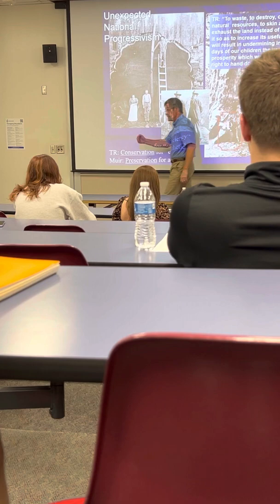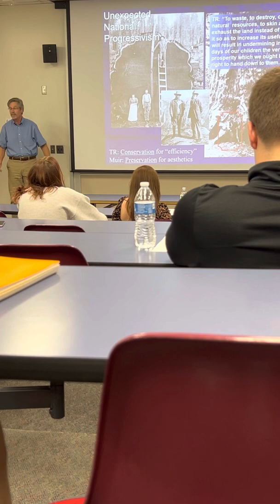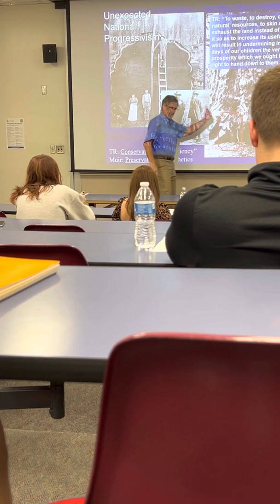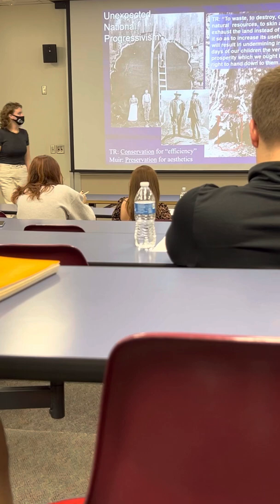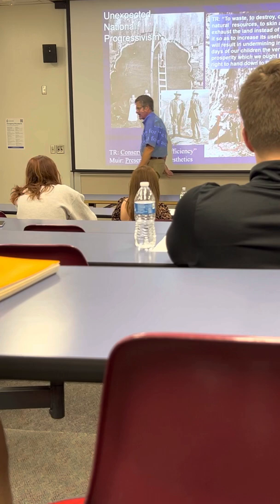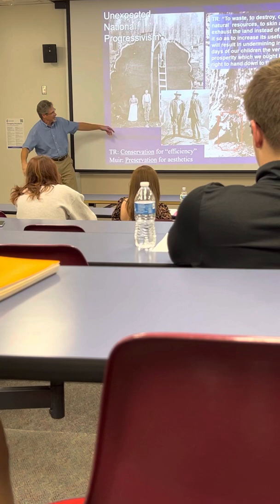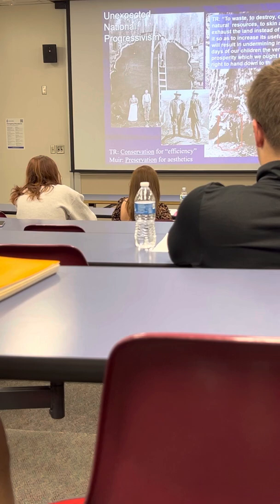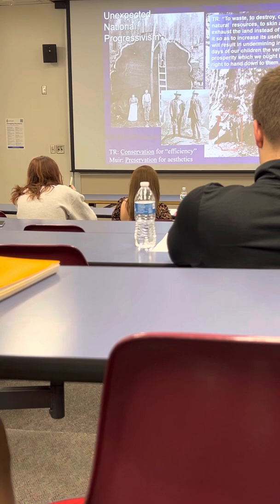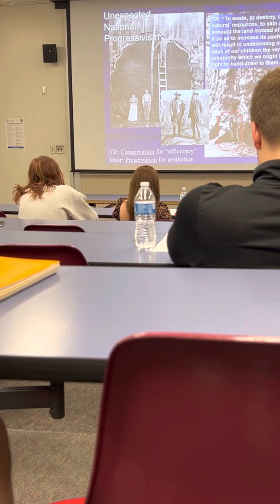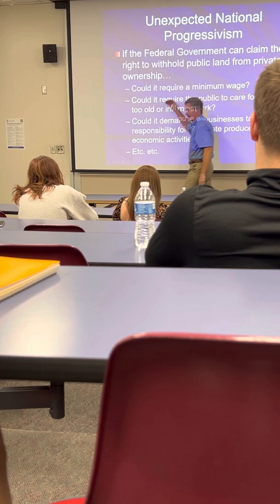Roosevelt cares deeply about conservation. Hundreds of millions of acres are going to be set aside permanently from federal development and private ownership, because he looks at this and says we have to conserve this as a component of what America once was — our natural heritage worth preserving. The Sierra Club founder John Muir argues it's more ethical to simply preserve land without any changes — no logging, no mining. You have the same moral and ethical conundrum of what's right, what's good, and which experts you're going to listen to.